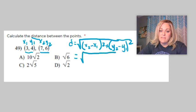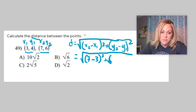So I line everything up. x2 is 7 minus x1, which is 3, squared, plus y2, which is 6, minus y1, which is 4. And square that as well.